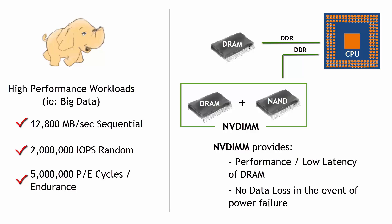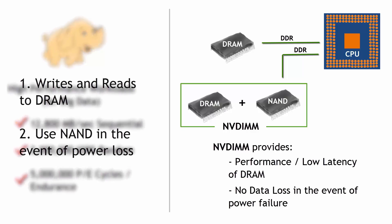So when you're looking for a server that's offering persistent memory or NVDIMM technology, you want to make sure of a couple things. You want to take advantage of the technology — I want all of my writes and reads, as many as humanly possible, to go to DRAM. I want that to be my workhorse. And then I want to be able to use NAND just to provide that safety net in the event of power loss.